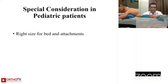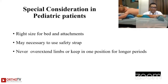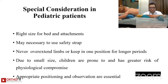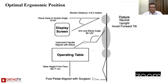For the pediatric population, the right size of bed and attachments is essential; safety straps may be necessary. Never overextend the limbs or keep them in one position for too long. Due to their small size, children are at greater risk of physiological compromise, so appropriate positioning and close observation are essential.